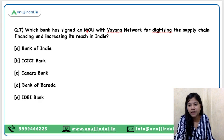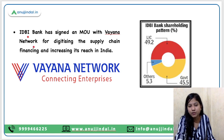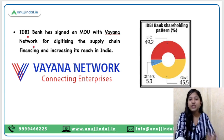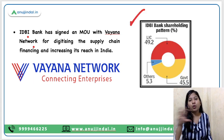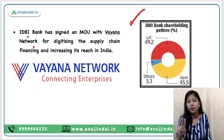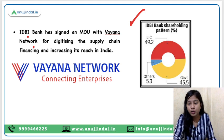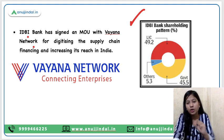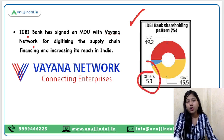Question number 7: Which bank has signed an MOU with Vaiana Network for digitising the supply chain financing and increasing its reach in India? IDBI Bank is the right answer. IDBI Bank and Vaiana Network have signed this MOU to digitise supply chain financing and increase its reach across India. Look at IDBI's shareholding composition: recently LIC and the central government both announced to sell 60% of their stake in IDBI to private players. LIC holds 49.2%, the government owns 45.5%, and other private players hold approximately 5.3% of shares in this bank.